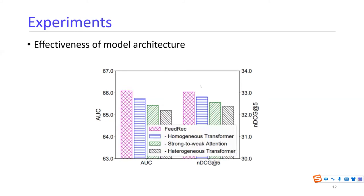We also explore the effectiveness of the core model architectures. We remove the homogeneous transformer that captures interaction between the same kind of feedbacks, or remove the strong-to-weak attention that uses strong feedbacks to select weak feedbacks, or remove the heterogeneous transformer that captures interactions between different kinds of feedbacks. We find that all core model components are informative and each contributes, more or less, to performance improvements.